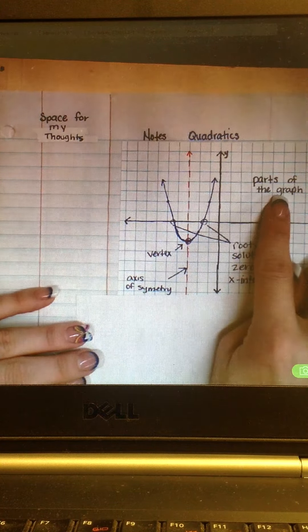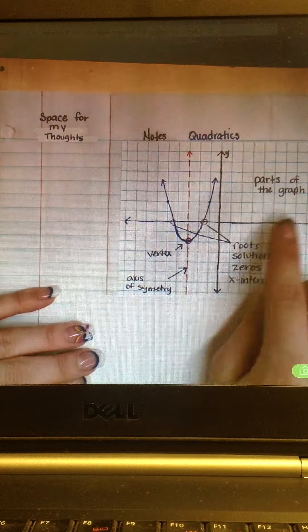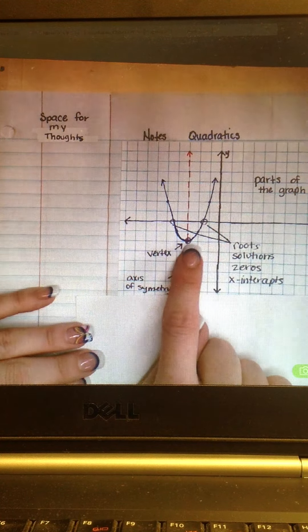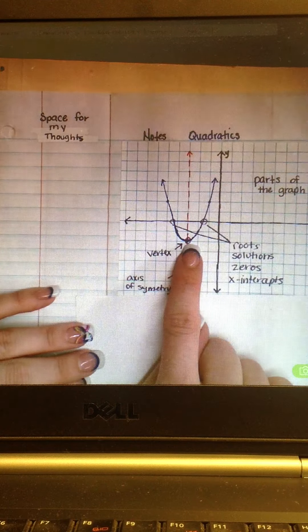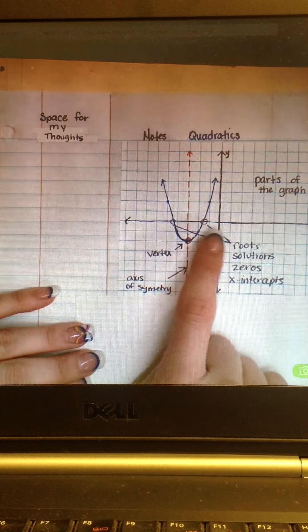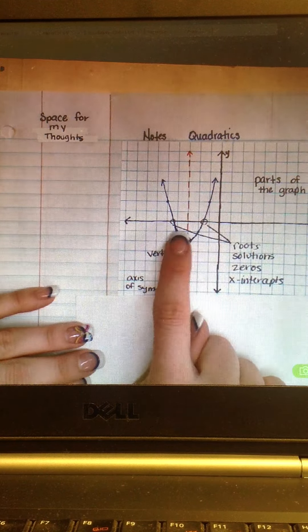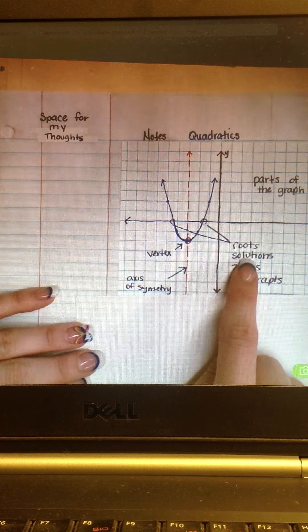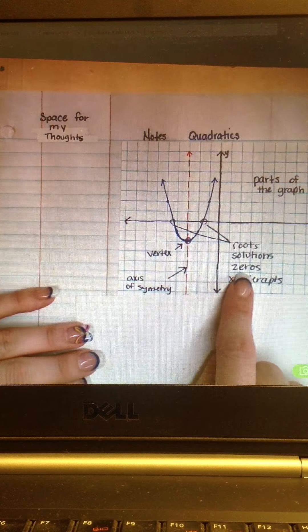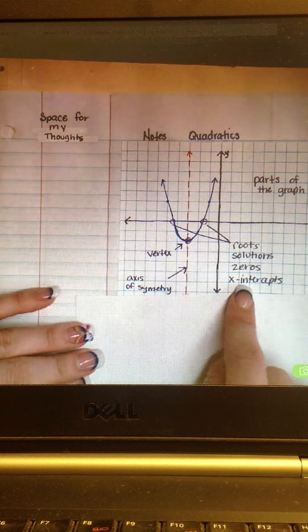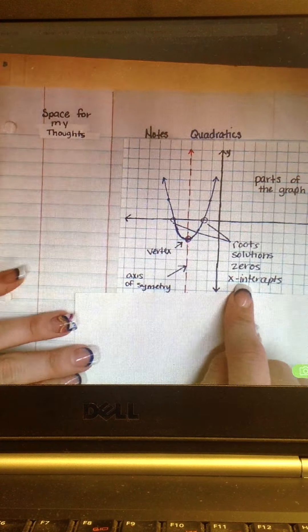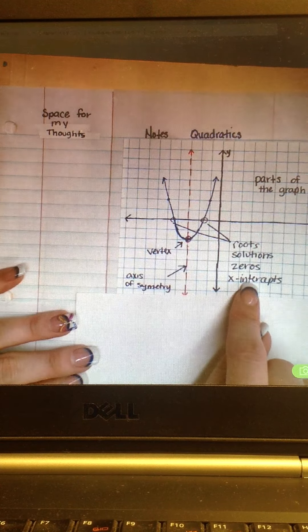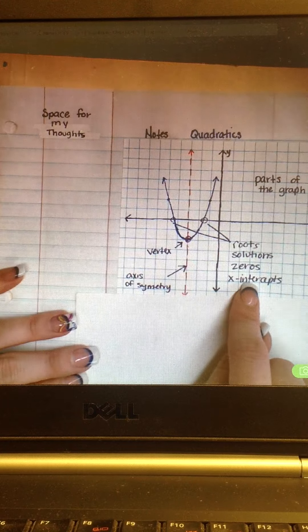And some of the important parts of the graph are labeled. So this part where the U bends right there is called the vertex. The points where it touches the X axis, and it would usually be two places, are known as the roots. It's also known as the solutions, also known as the zeros, also known as the X intercepts. I'm sure that you're quite familiar with all four of those words, but some of you may not realize that all four of those words mean the exact same thing.